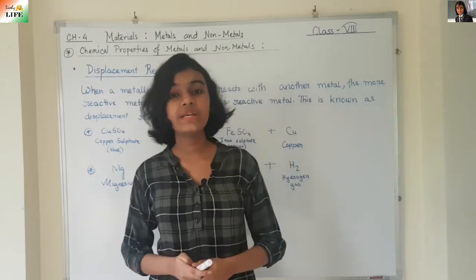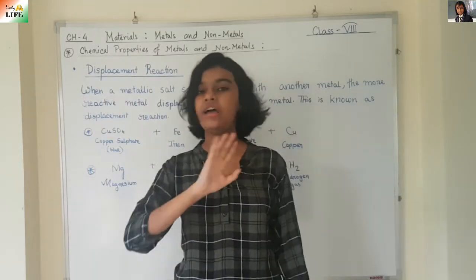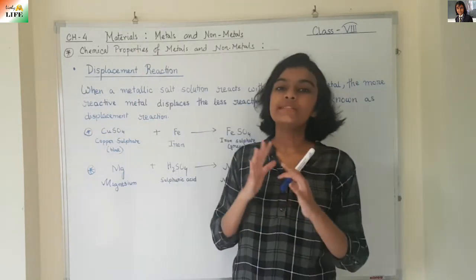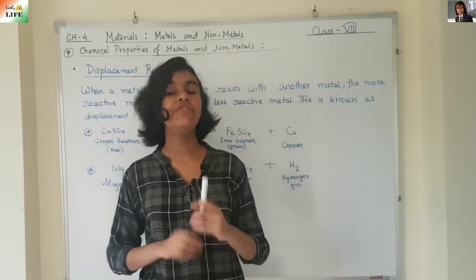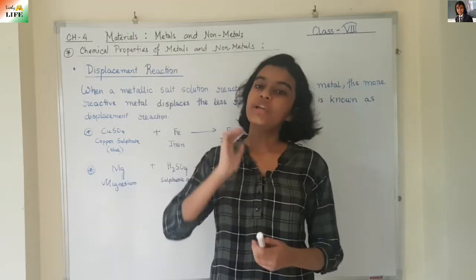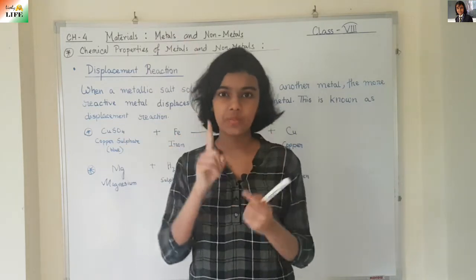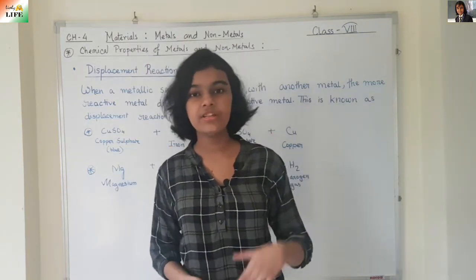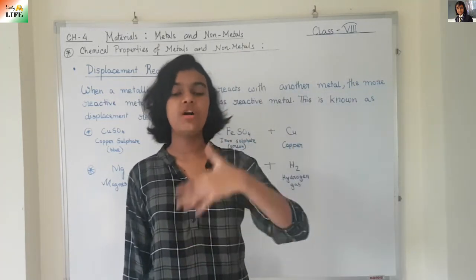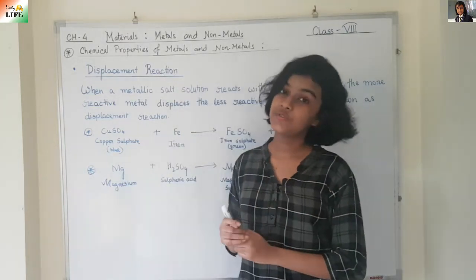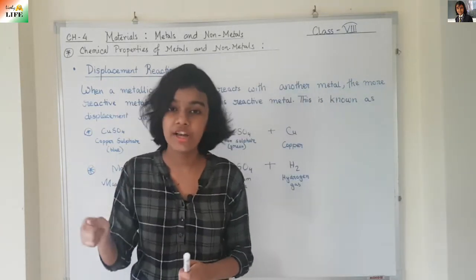Zinc coated around the iron prevents it from rusting — that is galvanization. These are some important uses of metals. Metals are very useful in our day-to-day life. Now let's move to non-metals. Non-metals are very useful too — we breathe in oxygen, which is a non-metal. Oxygen is so important to us; we would not live without it. Non-metal oxygen helps us to breathe.